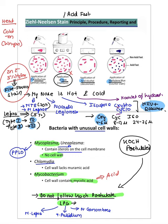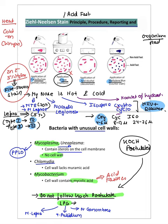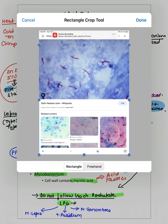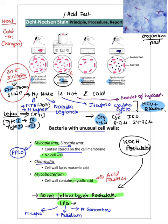Regarding acid-fast stain appearance: the organism appears red against a blue background. This is the classic appearance of mycobacteria — red organisms against a blue background from methylene blue counterstain. You may have performed this experiment in your labs.